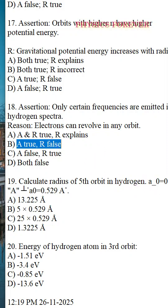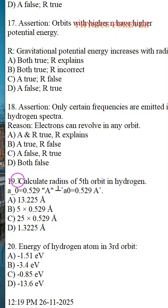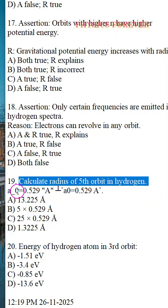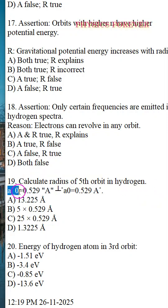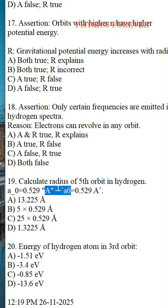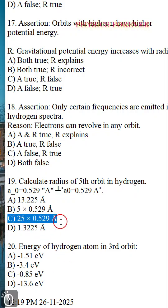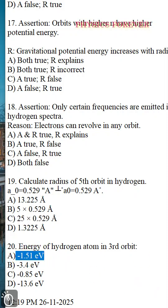Question number 19: Calculate the radius of the fifth orbit. Two values are given in terms of A naught (Bohr radius). Using those two given values, we finally get the answer as option C. Question number 20: The correct option is A.